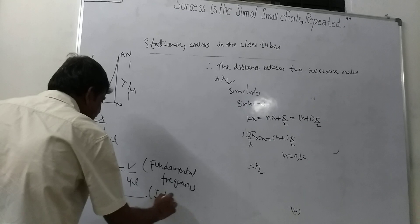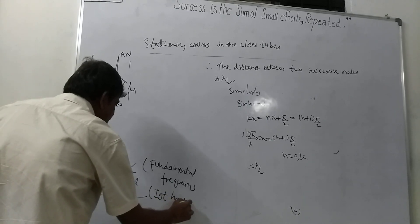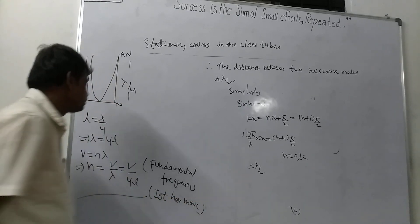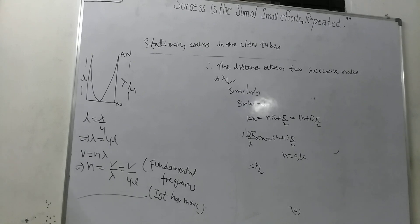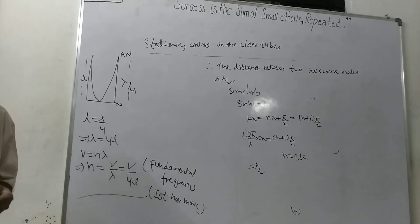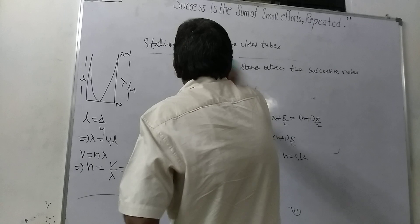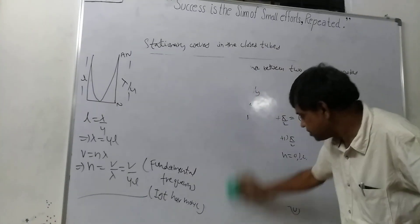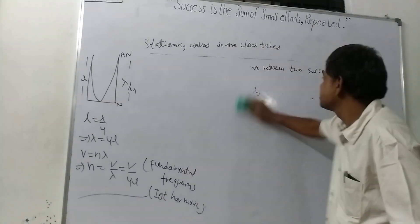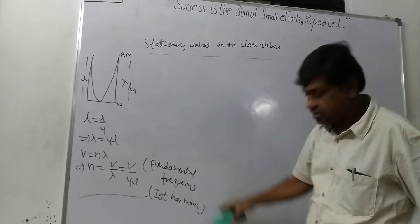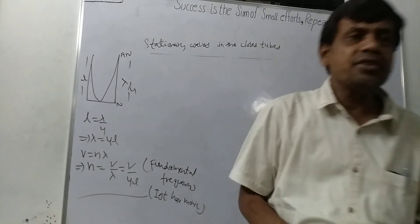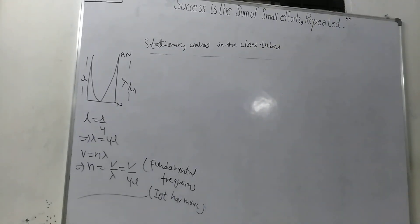This is also called the first harmonic. Similarly, when resonance happens the second time, we are finding the second resonance length. That is the second time resonating length.